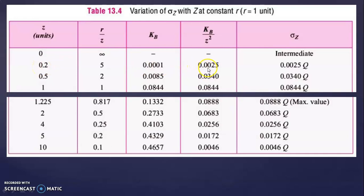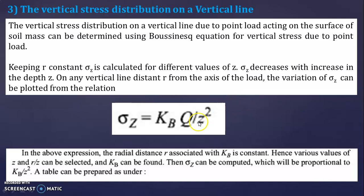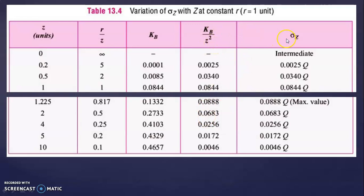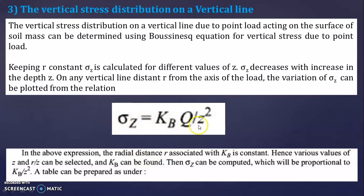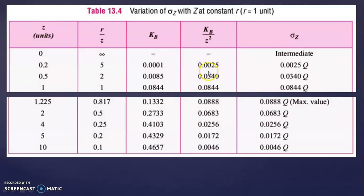Sigma Z equals KB times Q divided by Z squared, or equivalently KB divided by Z squared, times Q. So sigma Z equals 0.0025 times Q. If you have the value of Q, you can find the vertical stress at depth 0.2. Similarly, consider different values of Z. For Z equal to 0.5, R divided by Z is 1 divided by 0.5, which equals 2.